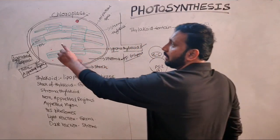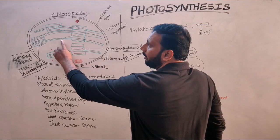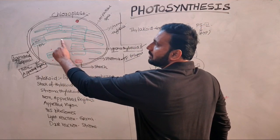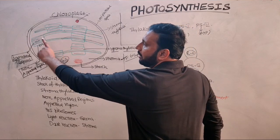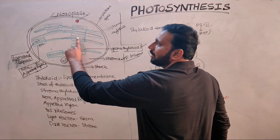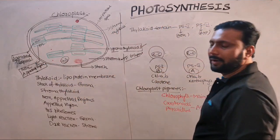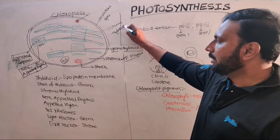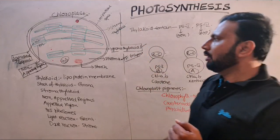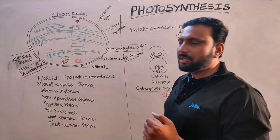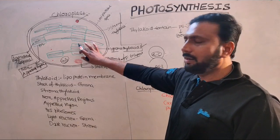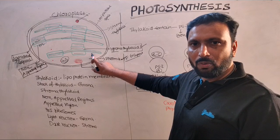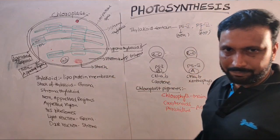The thylakoid that connects one grana to another grana is called the stroma thylakoid — that is an important point. Light reactions take place in the grana, and dark reactions take place in the stroma. We will discuss that in detail later.